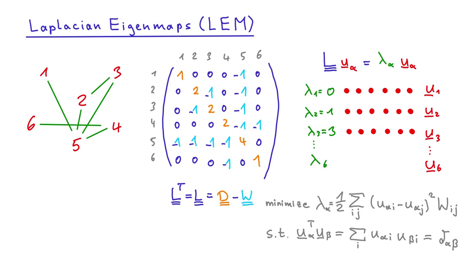A trivial solution is obviously a constant vector, where all components have the same value and as a result, lambda is 0. It is easy to see that the first eigenvalue is always 0, since the rows and columns of the Laplace matrix add up to 0 by construction.